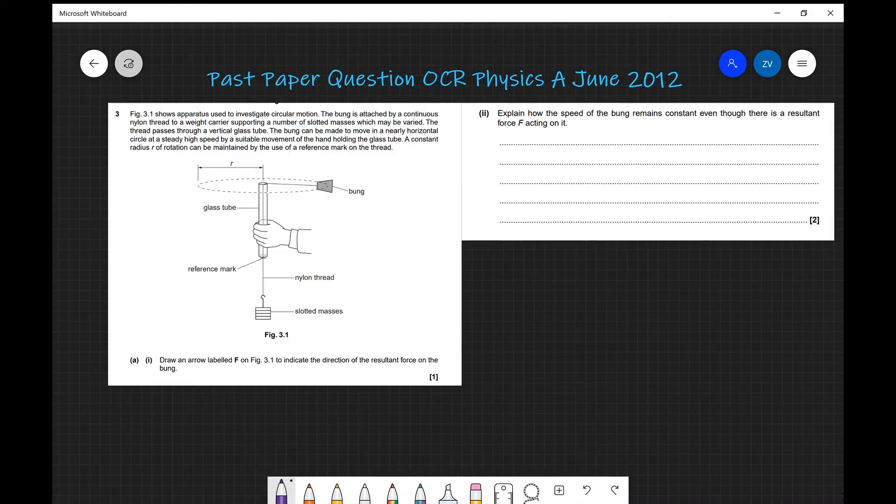We have the pretty standard apparatus to try and study circular motion in which we have a bung which is connected to a string which goes through a glass tube and there are some masses which are fixed right at the end.